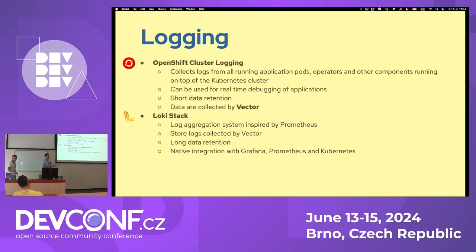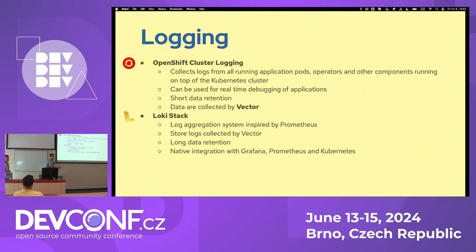Another important part is logging. When something runs for a long time, we need to understand from the logs what's going on — how reconciliations are running, what went wrong in specific situations. For that, we use OpenShift cluster logging, which works similarly to our monitoring solution. It deploys vector collectors running as a DaemonSet on every node of the Kubernetes cluster, and collects all logs from each pod running on the cluster.